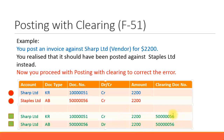You receive a clearing document number against those two line items. In SAP, when you have an open item it is denoted by a red circle, and if it's cleared it becomes a green square.